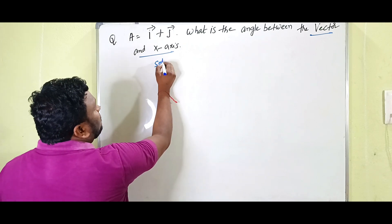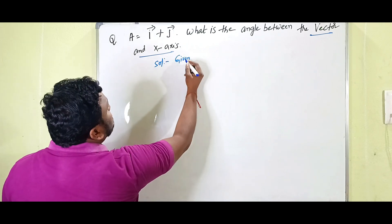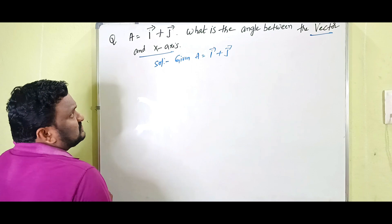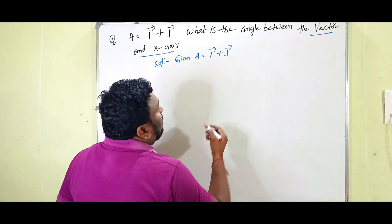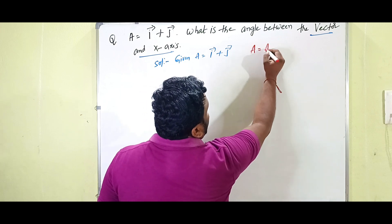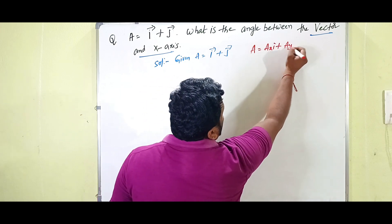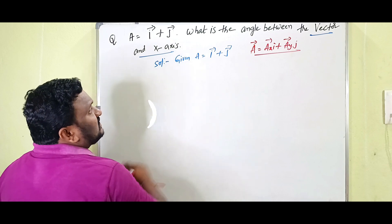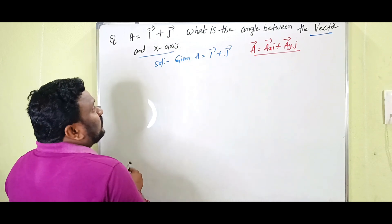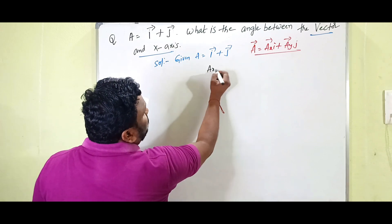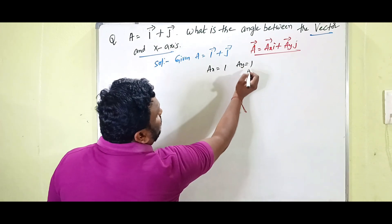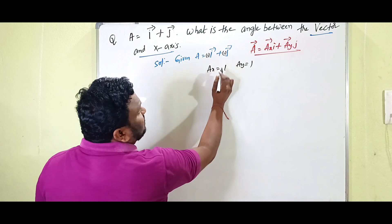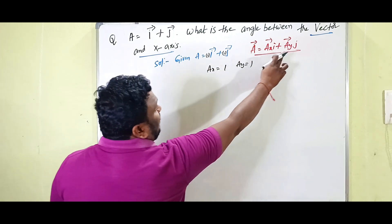The given equation is A equals i plus j. We compare this with the general equation A equals ax·i plus ay·j. Comparing both equations, we get ax equals 1 and ay equals 1, because there is only i and j with coefficient one each.